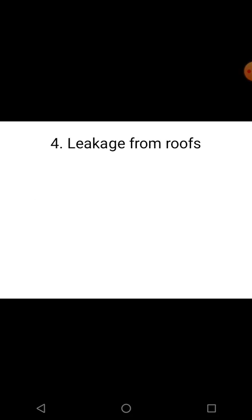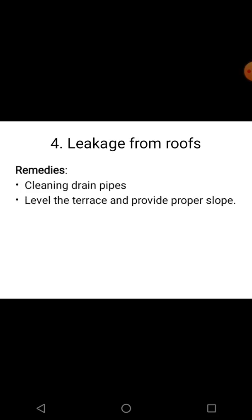The fourth defect is leakage from the roof. It can be avoided by: first, cleaning the drain pipes provided on the terrace to drain water; second, leveling the terrace and providing proper slope so that falling water can be drained easily; and third, carrying out waterproofing treatment to avoid rainwater penetrating into the slab.